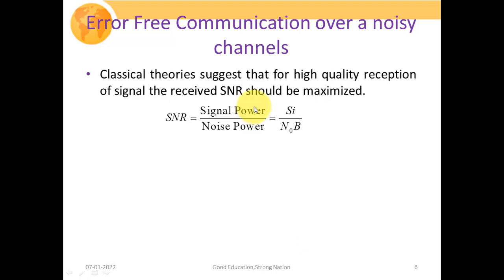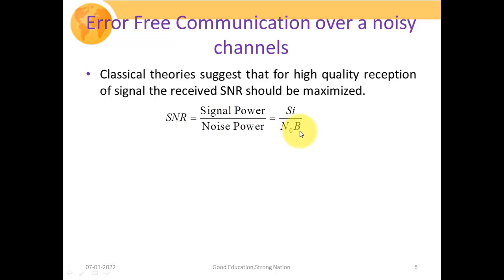Classical theory from analog communication suggests that for high quality reception, the received SNR should be maximized. SNR is the ratio of signal power Sᵢ to noise power N₀B, where N₀ is the noise power spectral density and B is the bandwidth. In digital communications, signal power equals Eb times Rb, where Eb is energy per bit and Rb is the bit rate.